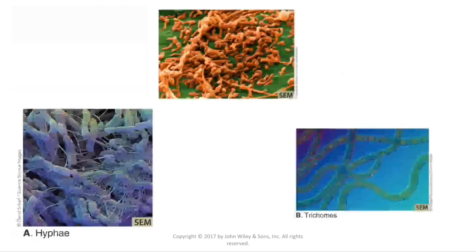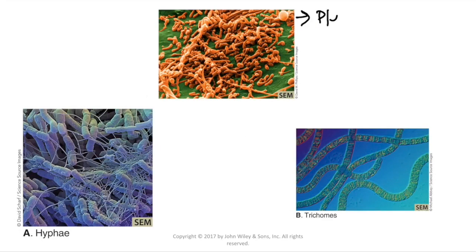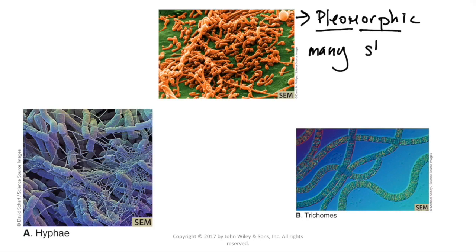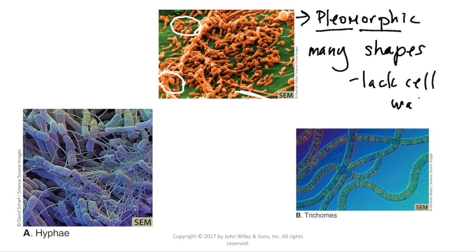Some bacteria come in a variety of shapes — we call these bacteria pleomorphic. Pleo means many and morph means shaped, so many shapes. If we look at the picture you can see some are really long, some are tiny little dots, and some are just weird-shaped altogether.